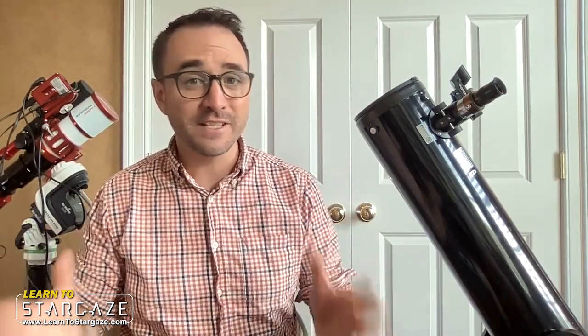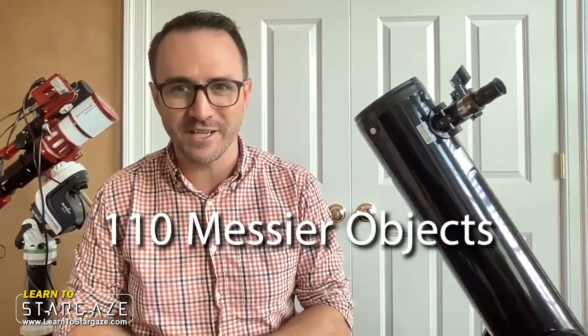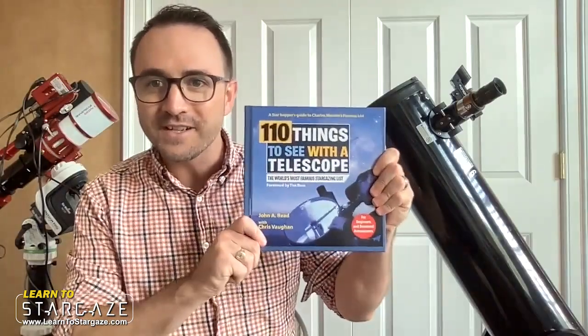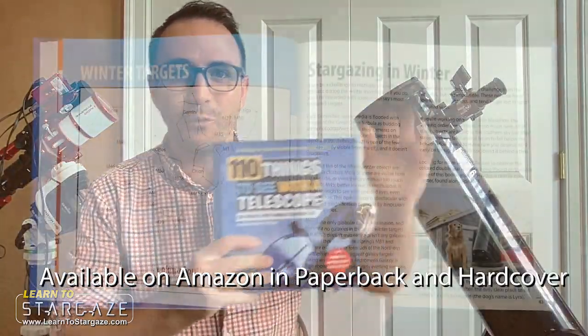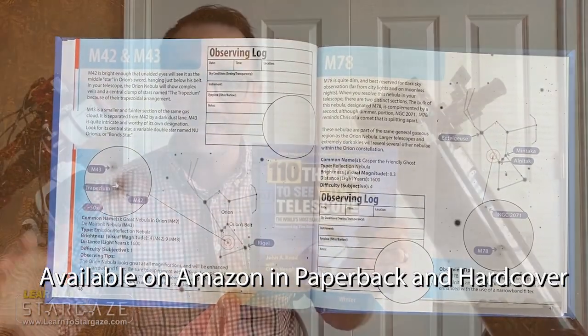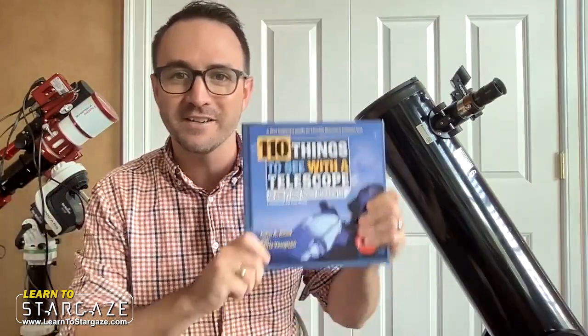Hey everyone, author and astronomer John Reed here from Learn to Stargaze. In this video I'm going to explain how to observe the 110 Messier objects, by far the world's most famous list of stargazing targets. I'm also officially announcing my new book, 110 Things to See with a Telescope, which is all about these 110 objects and how to find each and every one of them with your backyard telescope.